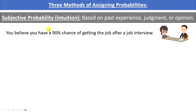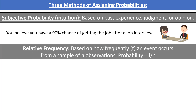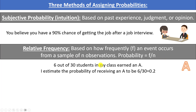The second method of assigning probabilities is based on relative frequency. This is based on how frequently an event occurs from a sample of n observations. The probability is found by taking F — how frequently the event occurred — divided by n, the sample size. For example, if 6 out of 30 students in a class received an A, we'd estimate the probability of a student getting an A as 6/30, which is about 0.2.